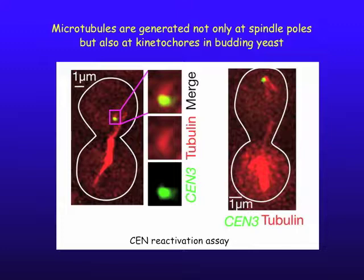So how is this game relevant to our finding in this paper? We are studying how kinetochores initially interact with microtubules extending from a spindle pole. We found that microtubules are generated not only at spindle poles, but also at kinetochores in budding yeast. To study this, we used an engineered centromere reactivation assay. In the left-hand cell, we have a mitotic spindle as shown by the yellow arrow. You can see a tubulin signal slightly extended from the kinetochore. In the right-hand cell, two microtubules are more clearly extended from the kinetochore.